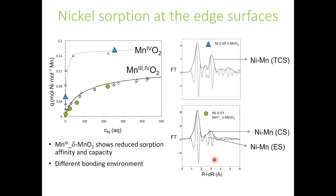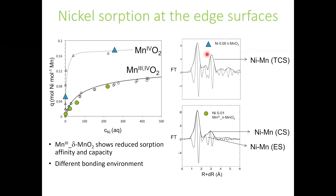Let's look at the adsorption of nickel on those two different oxide preparations. For delta MnO₂ containing no Mn(III), shown by triangles, we see very high affinity and we reach loadings of about 16%. If instead we look at adsorption onto the Mn(III)-rich material, we see lower affinity and lower capacity. We then collect EXAFS spectra of samples at a range of loadings. At a 5% nickel loading — below the vacancy content — the dominant bonding environment is nickel in the triple-corner-sharing complex at the vacancy sites.